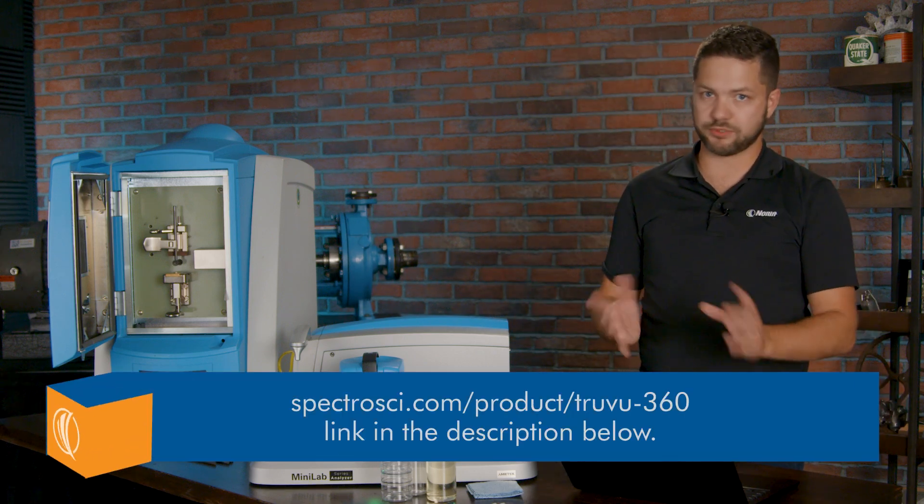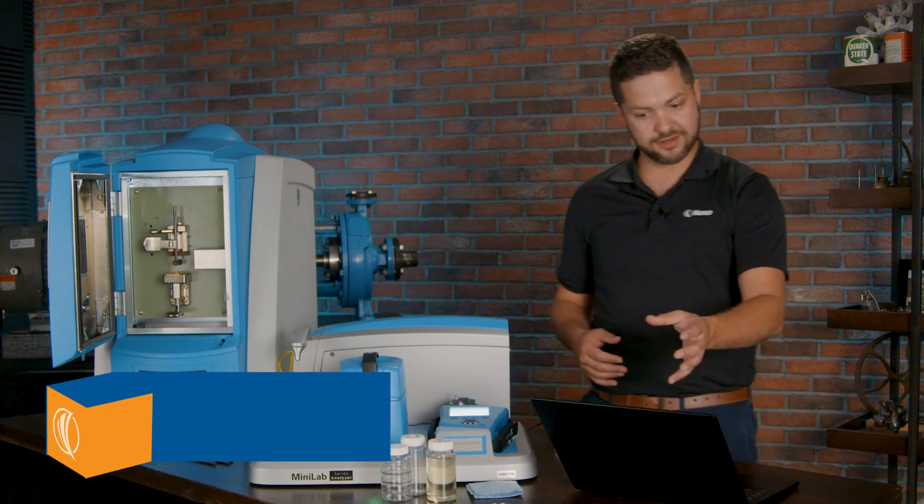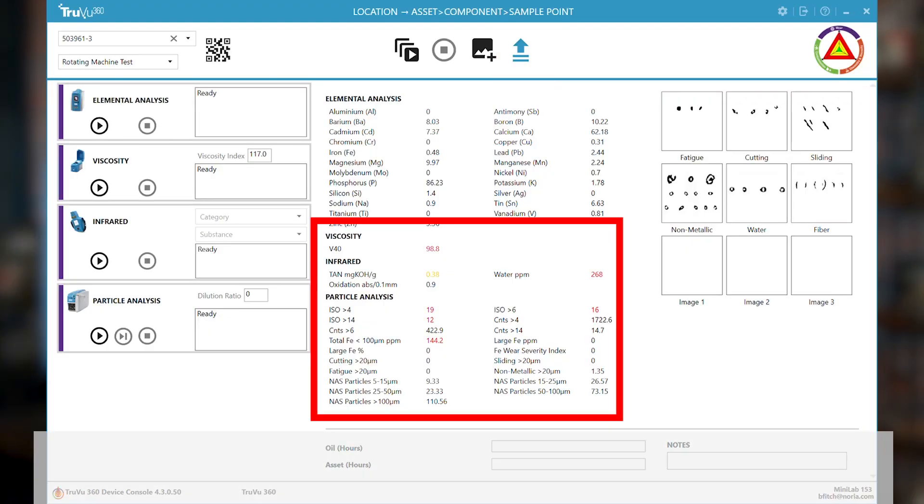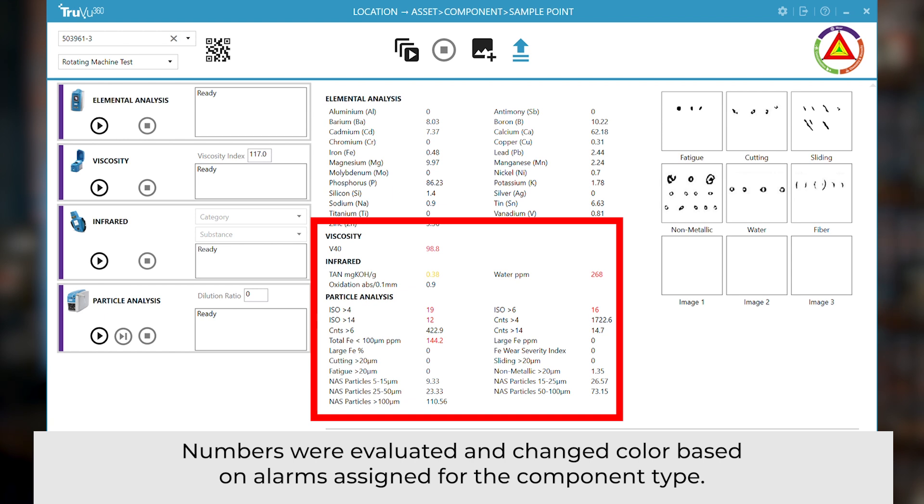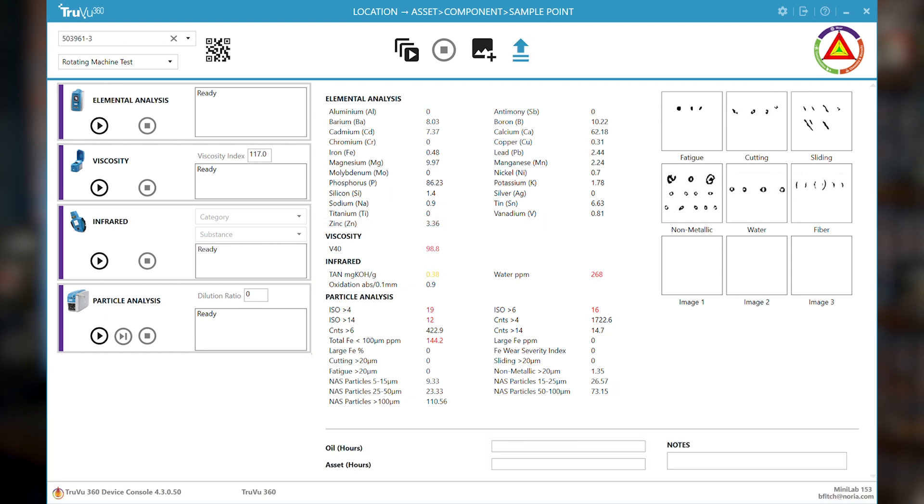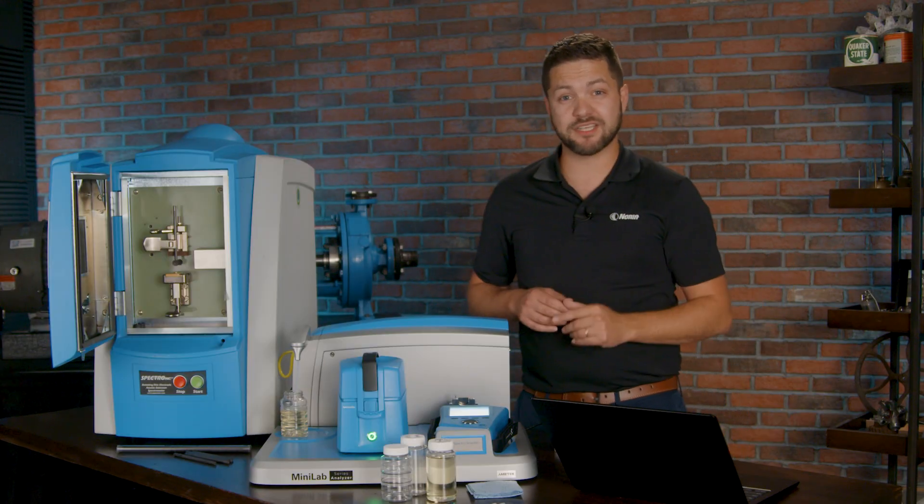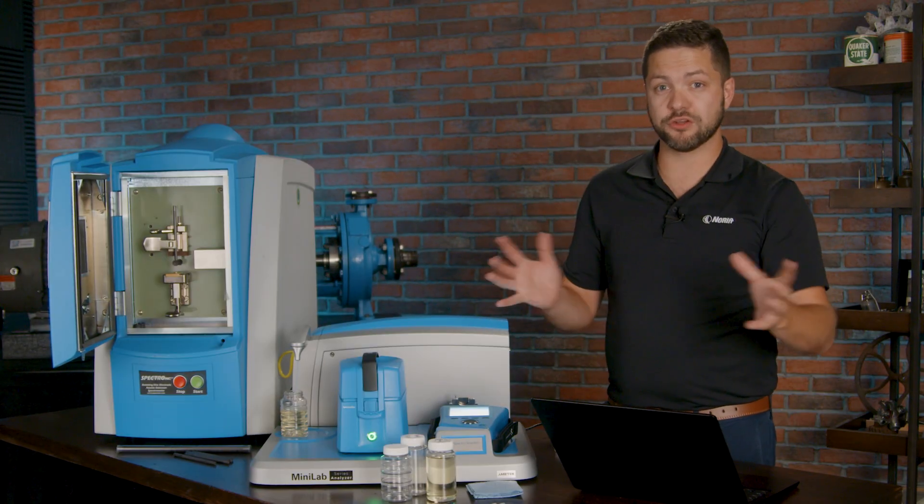Now, collecting the data here is pretty straightforward. It's just showing you the data. When you're ready, of course, you just hit upload. Now, what that does is it sends it to the main TrueView 360 software where you'll see the full oil analysis report. So give me a second. We're going to jump right into that and we're going to show you how you can use that data.